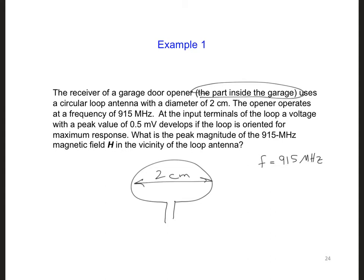And at the input terminals of the loop, right here, a voltage with a peak value is reached, which is 0.5 millivolts. So I'll say peak.